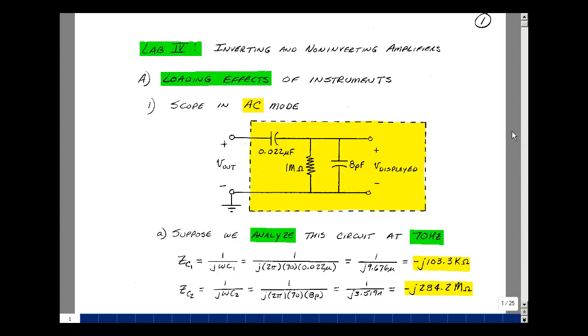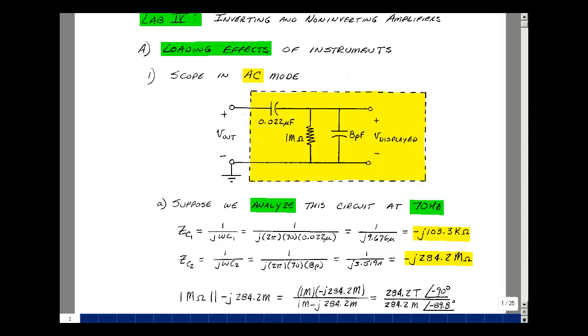Let's analyze this circuit at about 70 Hz. The impedance of the capacitor is 1 over j omega c, and for this capacitor, it's going to be 1 over j 2π times 70 times 0.022 microfarads. That turns out to be minus 103.3 k-ohms. The 8 picofarad capacitor also has an impedance of 1 over j 2π 70 times 8 picofarads, and that's minus 284.2 megaohms.